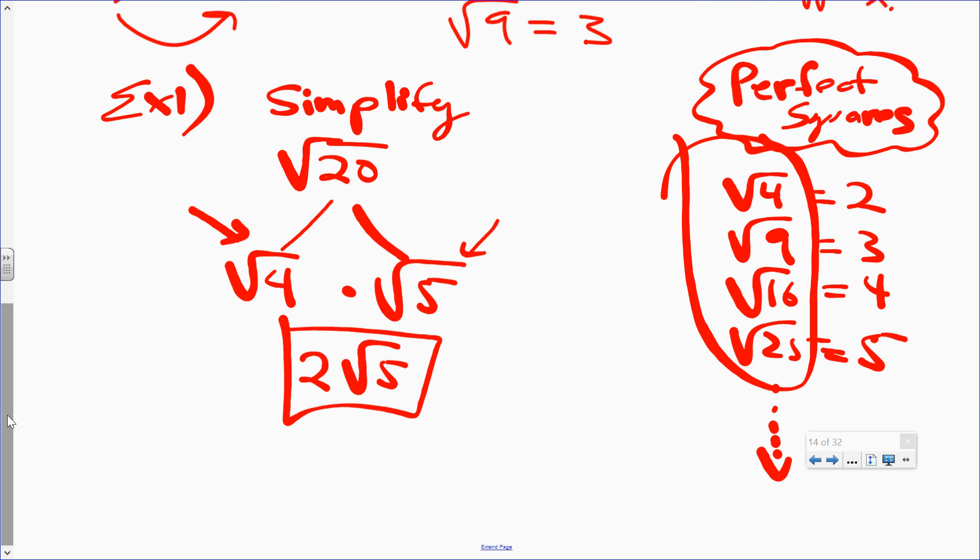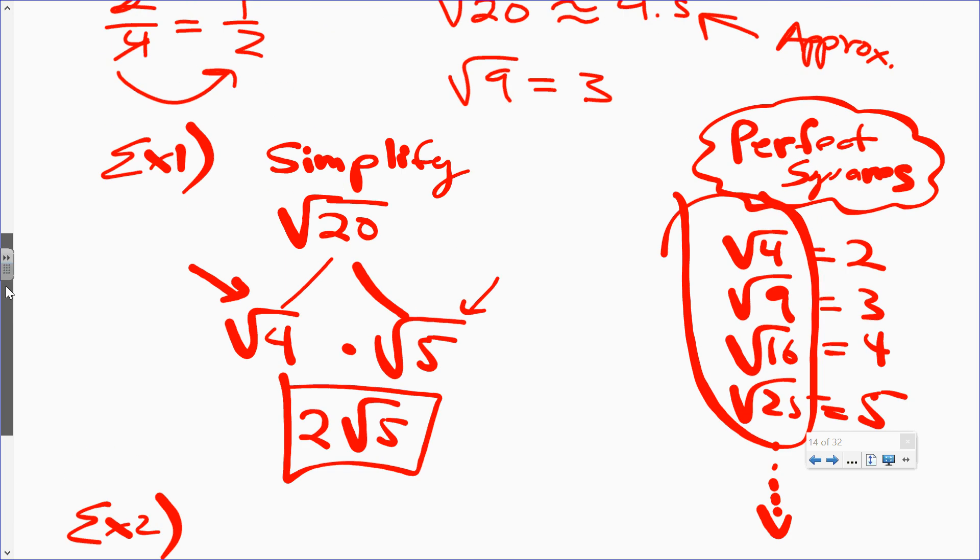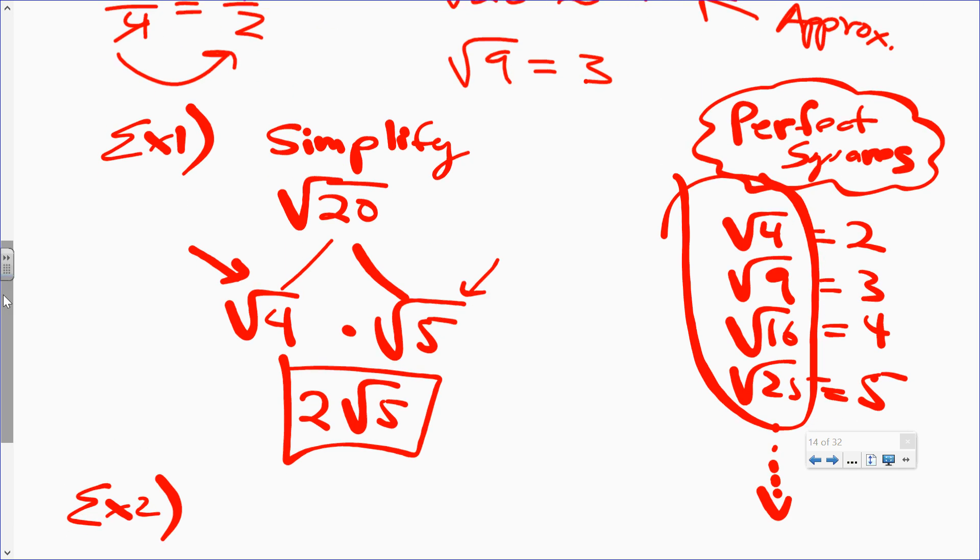Example 2. Before we go on, 2 rad 5 is the same as square root of 20. 2 times the square root of 5 is the same as square root of 20. If you type this into your calculator, you get the same thing. This is just a simplified version of that. That's all we're doing right now. We're just simplifying irrational numbers.